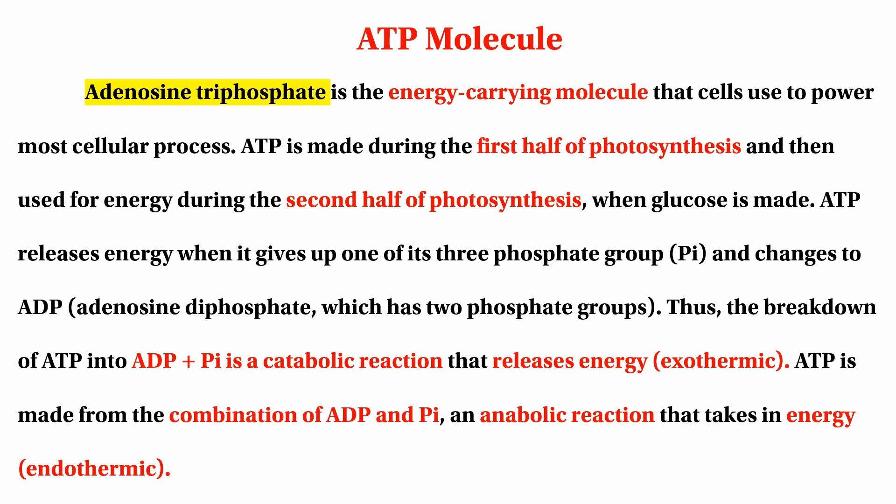ATP is made during the first half of photosynthesis and also during the second half of photosynthesis. ATP releases energy when it loses one of its three phosphate groups, converting adenosine triphosphate to a lower energy form.